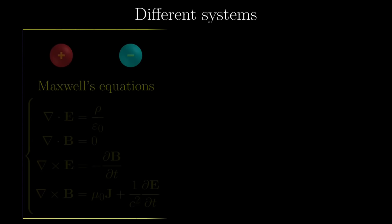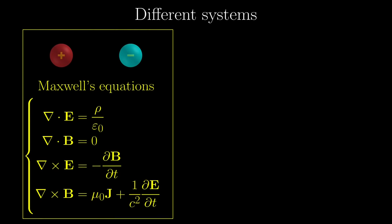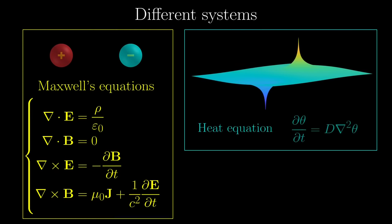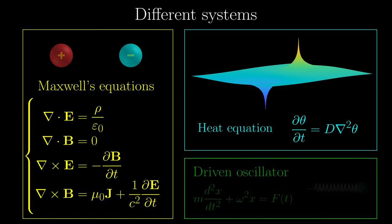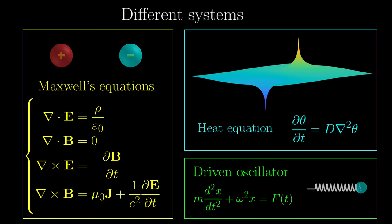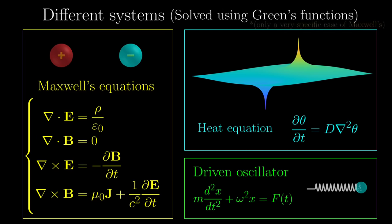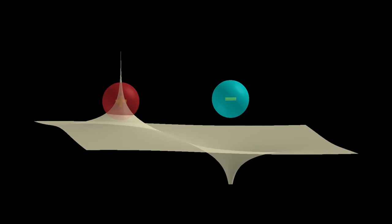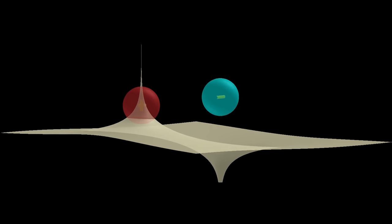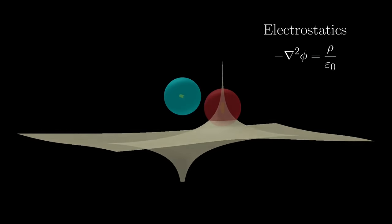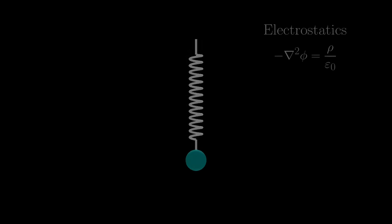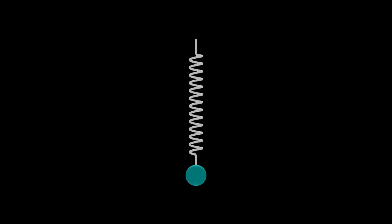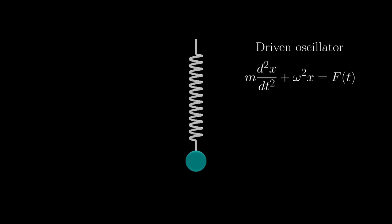Lots of systems are governed by differential equations, which is why we want to solve them systematically. Green's function is a very powerful and clever technique to solve lots of them. To illustrate intuitively how it works, we will consider electrostatics, one of the problems Green was interested in, and Newtonian mechanics, specifically an oscillator under some variable force.